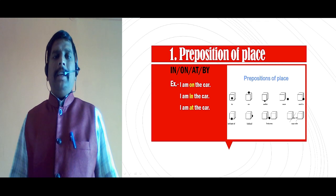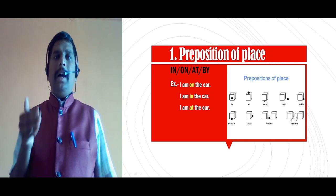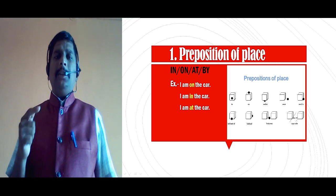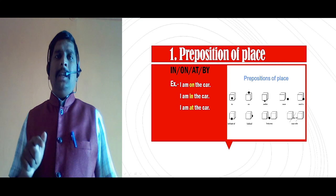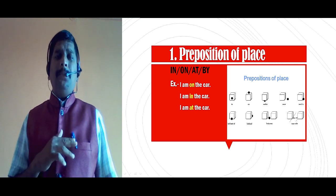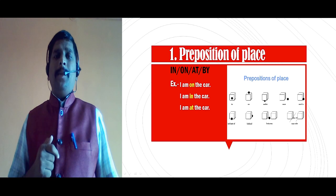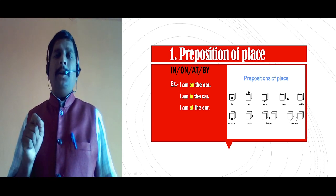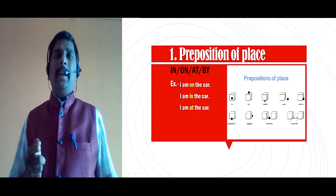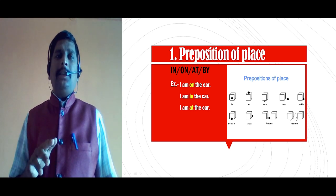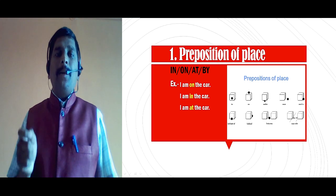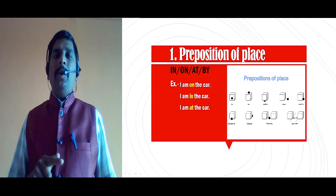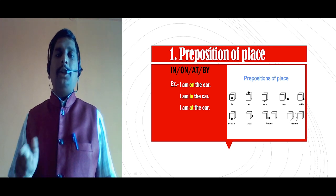Friends, see the example: I am on the car, I am in the car, I am at the car. I have used various prepositions — on, in, at — and all these prepositions show position or place of the particular words. So that's why the whole example is the same, but due to the different preposition, the meaning is different. That's why today we are going to learn preposition of place.